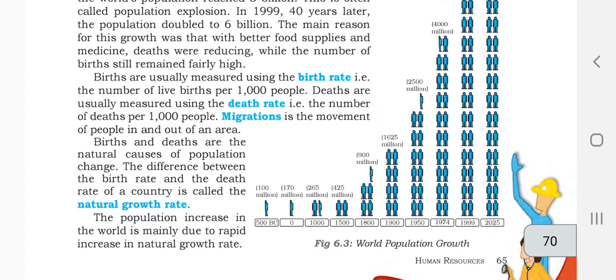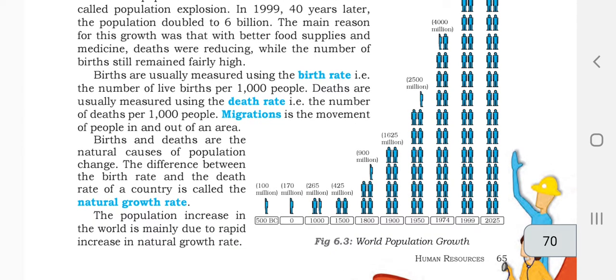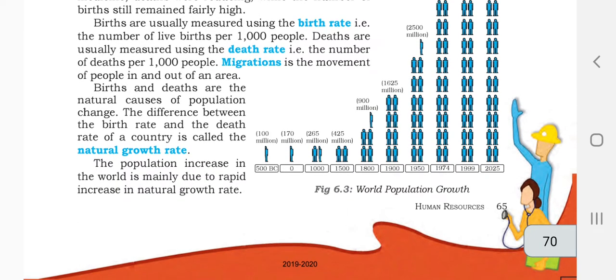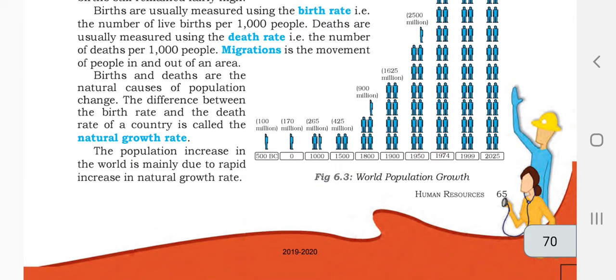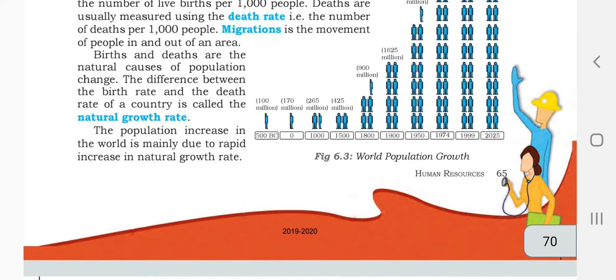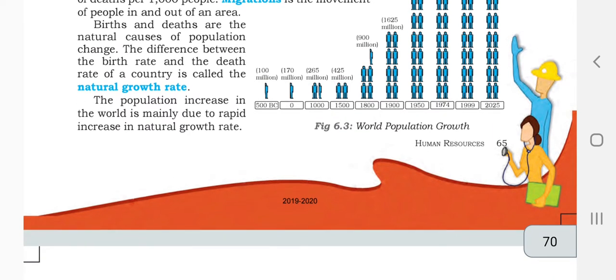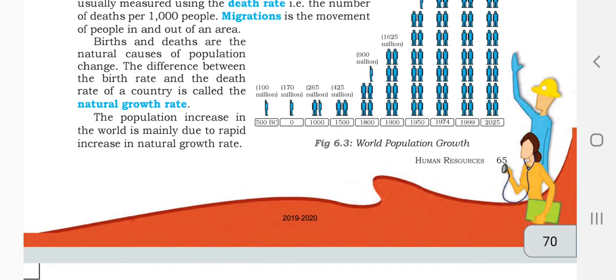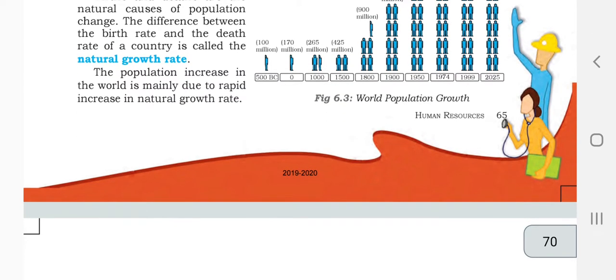Migration — the movement of people in and out of an area — also affects population. Births and deaths are the natural causes of population changes. The difference between the birth rate and the death rate of a country is called the natural growth rate. Every country will have its own rate — some countries have more births, some have higher populations. In that way they count the population of each country.